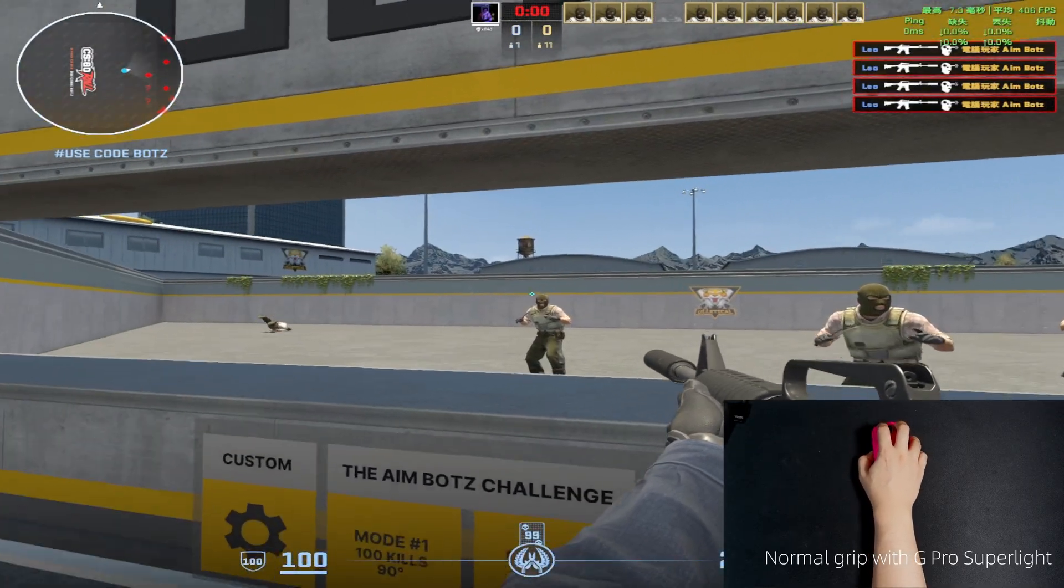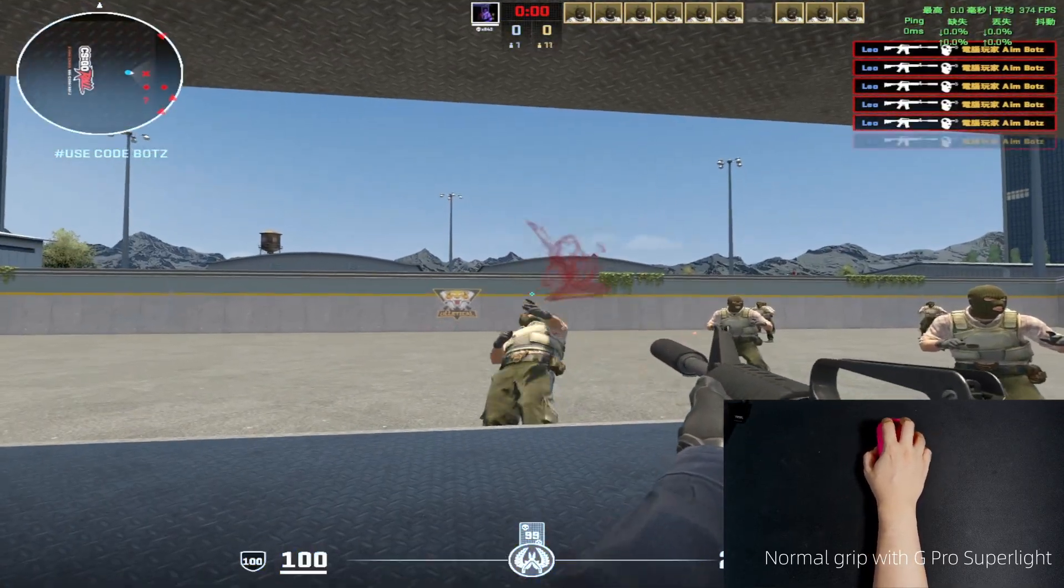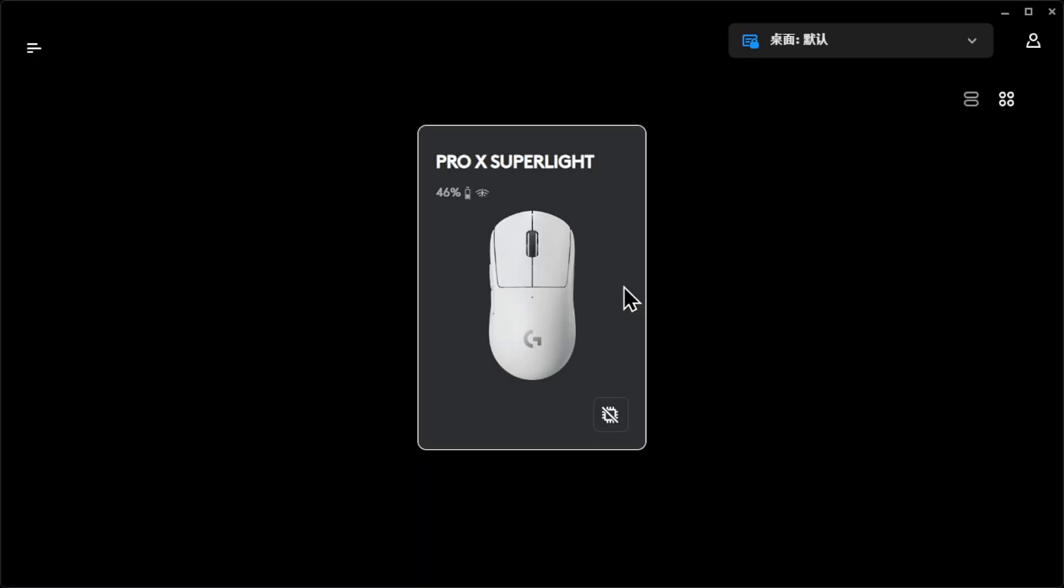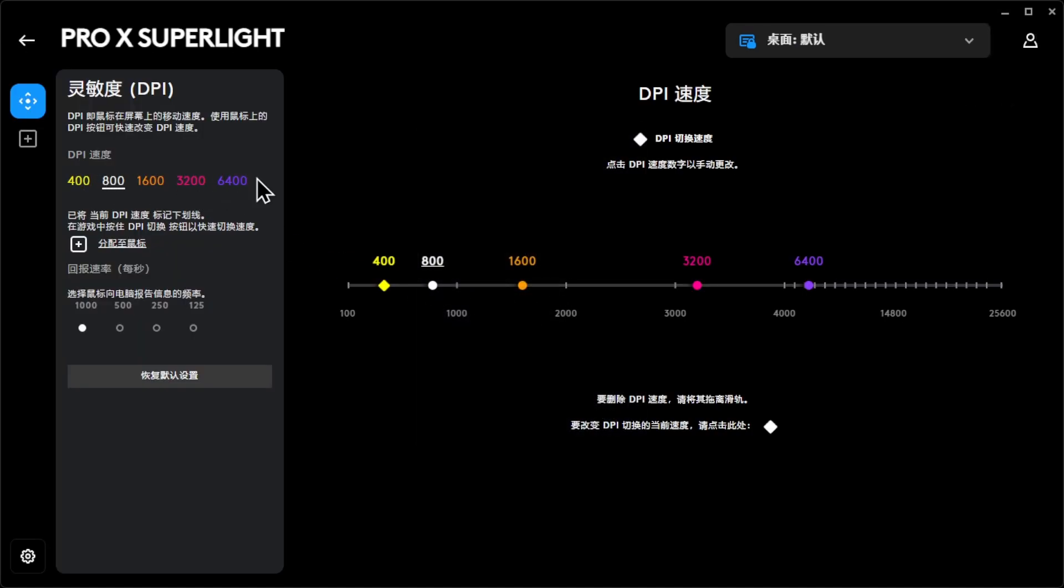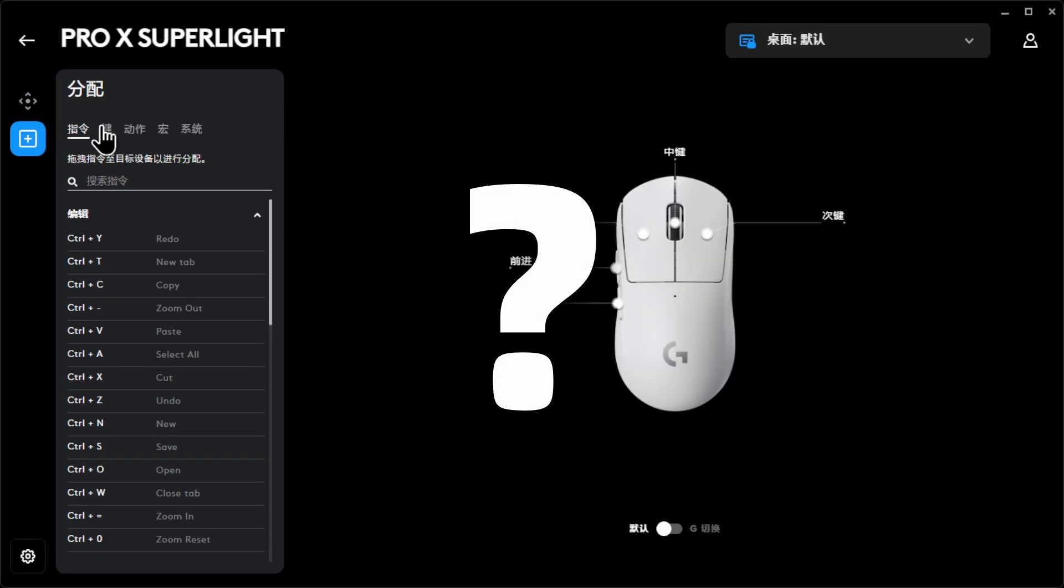No wonder it's harder to keep my crosshair at head level. But when I open the G-Hub, it has nothing about the sensor angle. What should I do if I really want to use my normal grip?